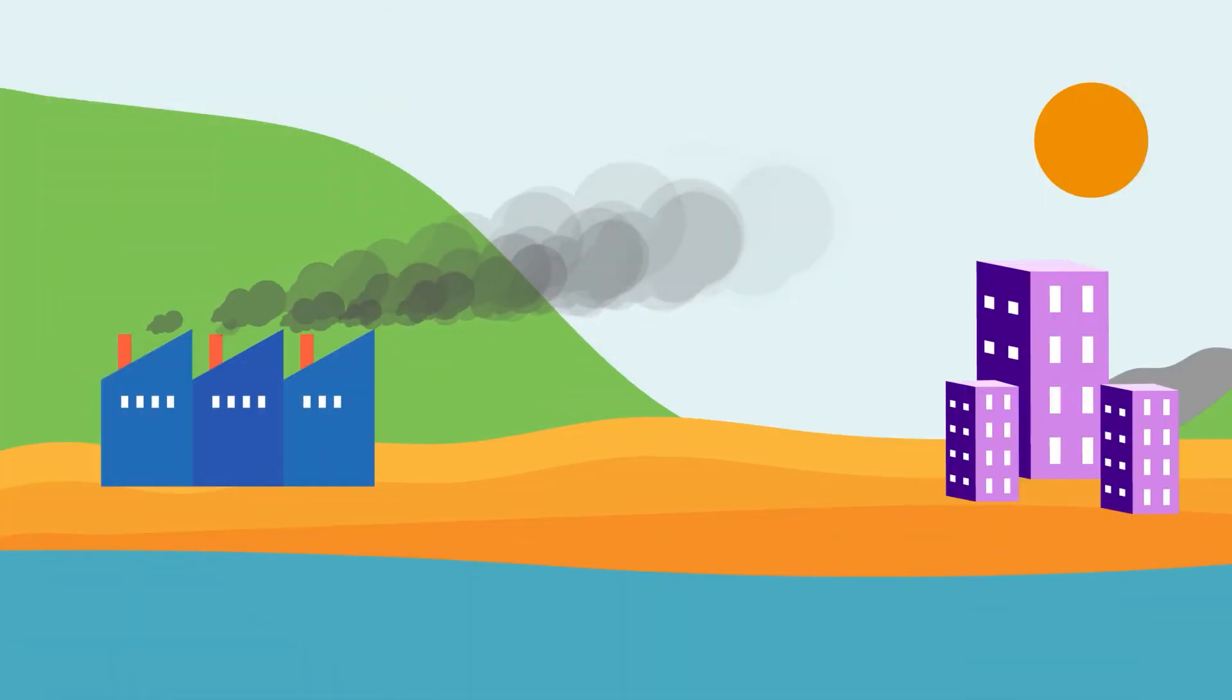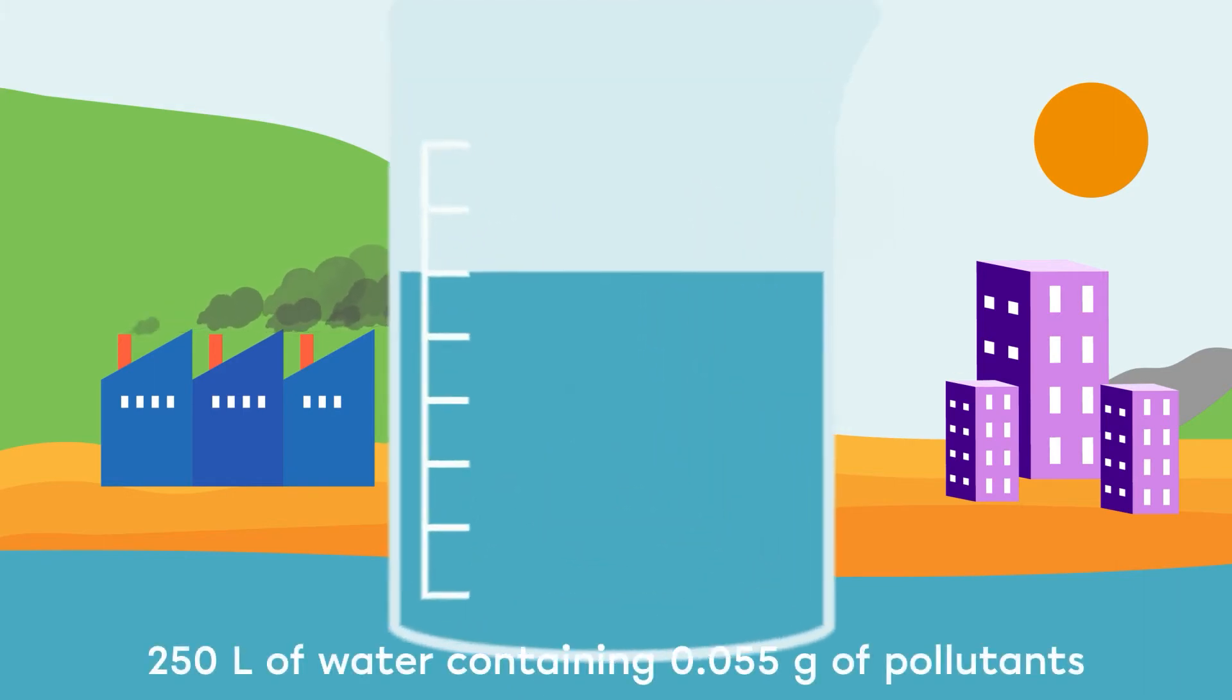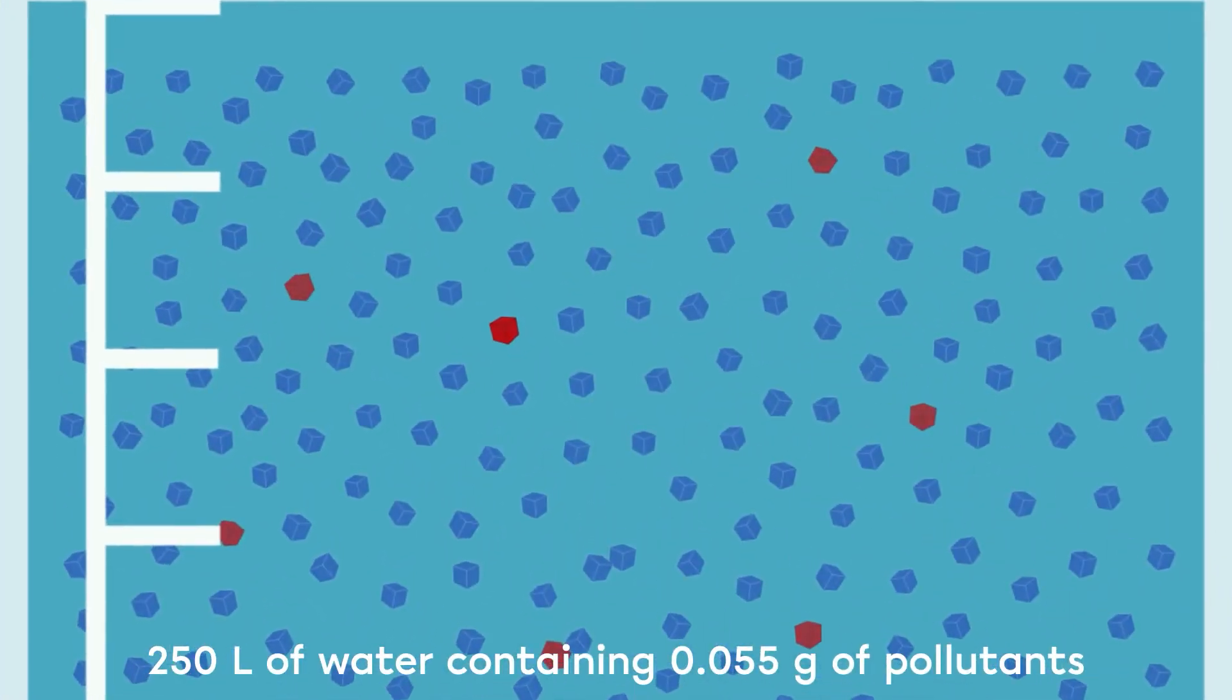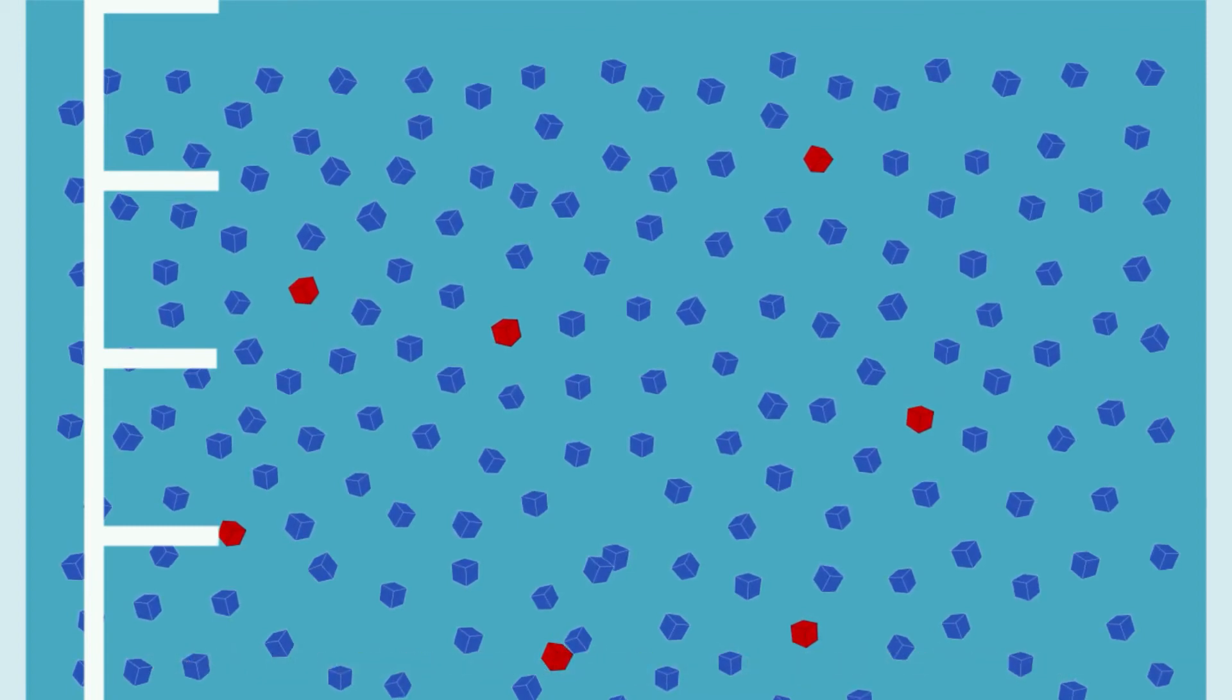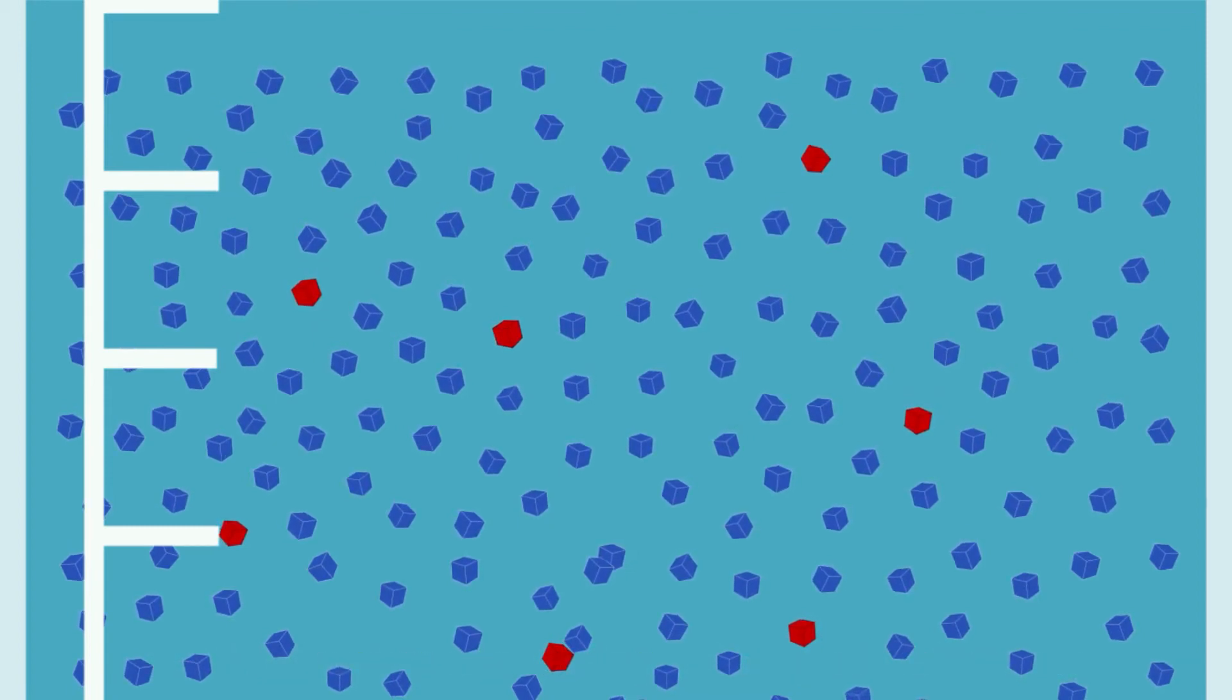Let's measure the amount of pollutant in water near a lake. A sample of 250 liters of water contains 0.055 grams of this pollutant. We want to calculate its concentration in PPM.